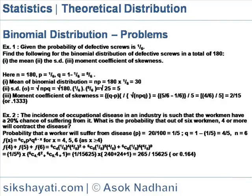Plus 6C6 into 1 by 5 to the power 6 into 4 by 5 to the power 0, is equal to 1 by 5 to the power 6 into 6C4 into 4 to the power 2 plus 6C5 into 4 plus 1.